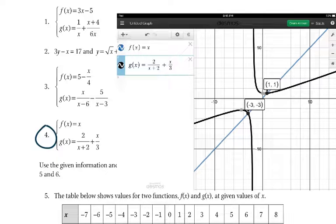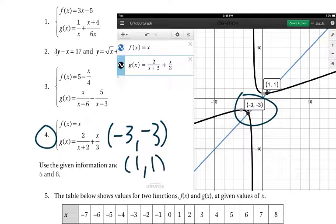So the black one, you can see that rational. The blue one is our linear. They intersect at negative 3, negative 3, and at 1, 1. So there's the two points of intersection. There are the answers.